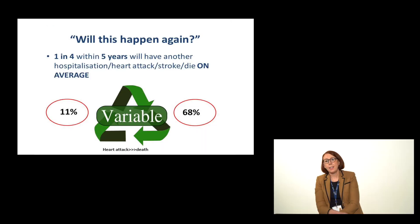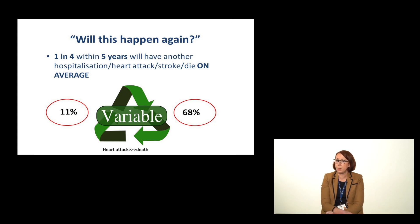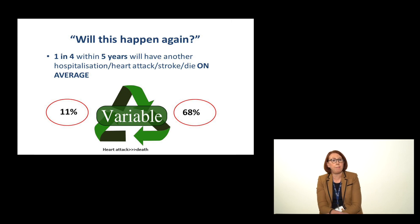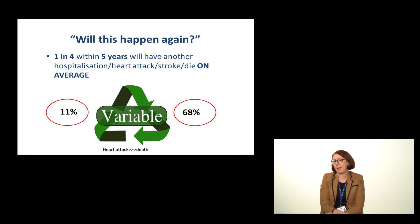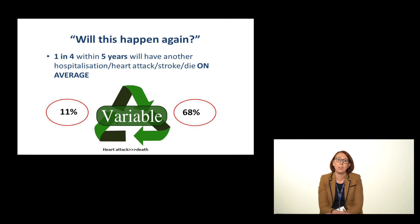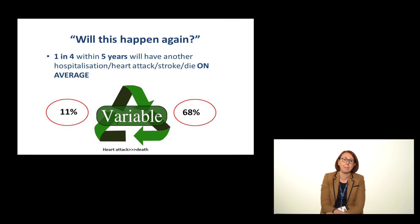Another question I get is will this happen again? The answer really is that depends. On average one in four patients within five years will have another hospital admission with chest pain or heart attack or stroke, or die. The death rate is very low and the more common event is another heart attack, but this risk is very variable from patient to patient and it can vary from as low as one in ten to as high as seven in ten. And why is this risk so variable? It's because of these modifiable risk factors, and somewhat surprisingly only one in ten patients with heart conditions lead optimal healthy lifestyles after their heart attack. Half of those who smoke before their heart attack continue to smoke. Only half are regularly physically active and less than half are eating an optimal diet.